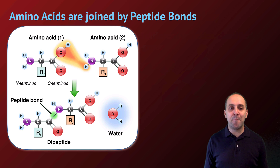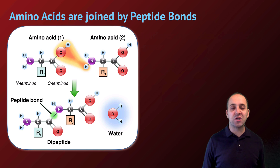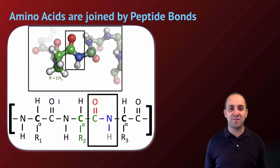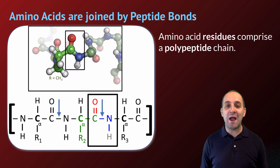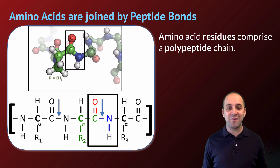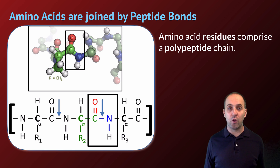When we join amino acids together, we join them by a peptide bond, which is a covalent bond that forms between the oxygen and hydrogen of the carboxyl group of the first amino acid and one of the hydrogens of the amino group of the next amino acid in the chain. This is yet again another example of dehydration synthesis. A chain of amino acids is generally referred to as a polypeptide chain, and once incorporated into that chain, they're no longer referred to as amino acids — they're referred to as amino acid residues. You should be able to look at a chain of amino acid residues and identify the peptide bonds holding them together.